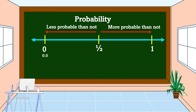Zero we can write in decimal as 0.0 and in percent as zero percent — this means it is impossible to happen. One quarter we can write in decimal as 0.25, or in percent as 25 percent — this means that it is unlikely to happen.